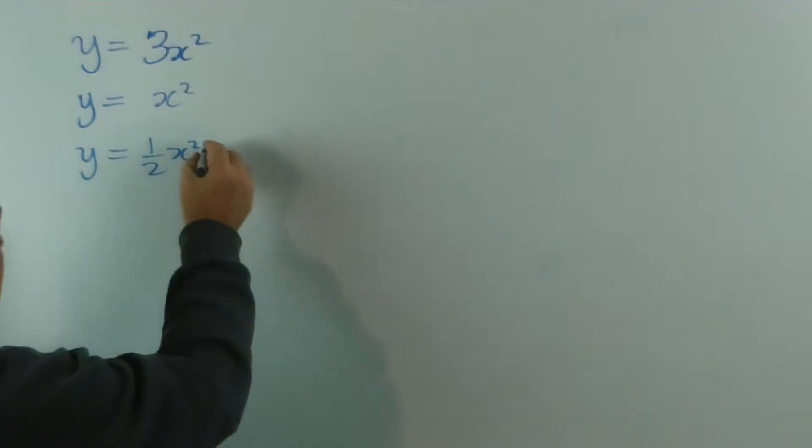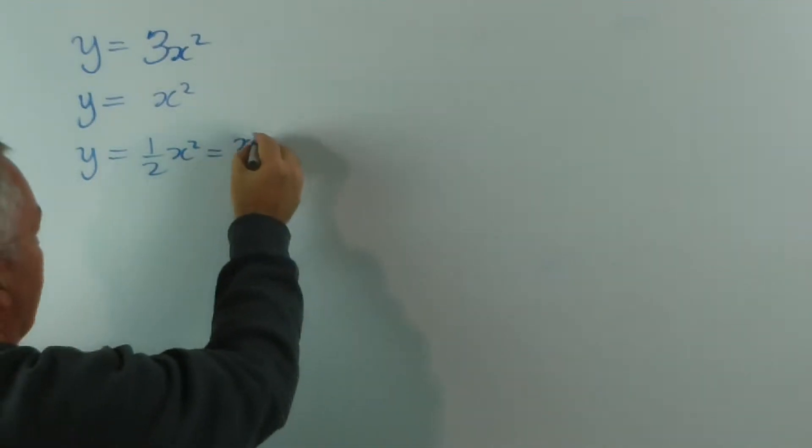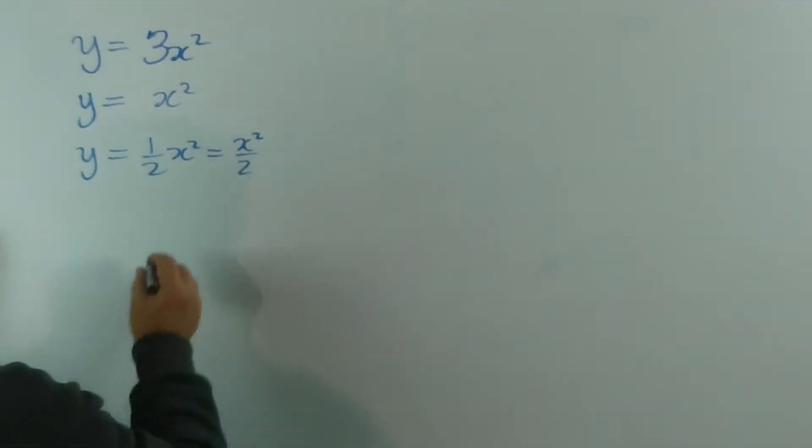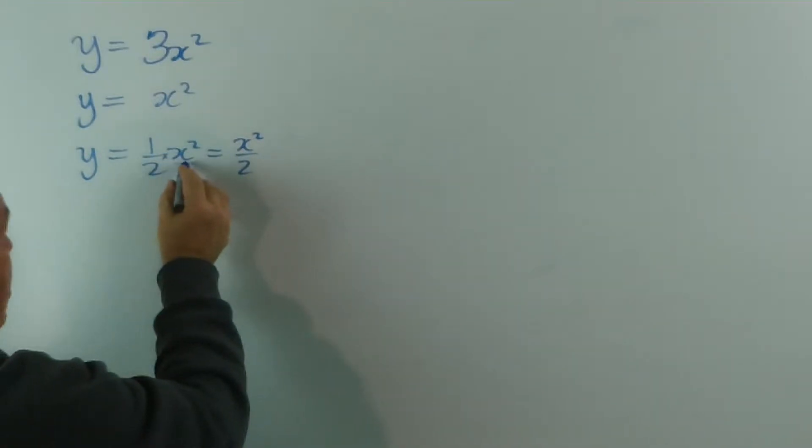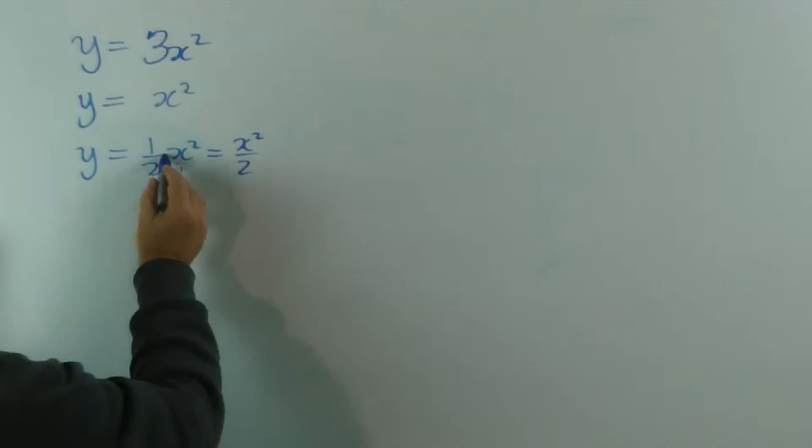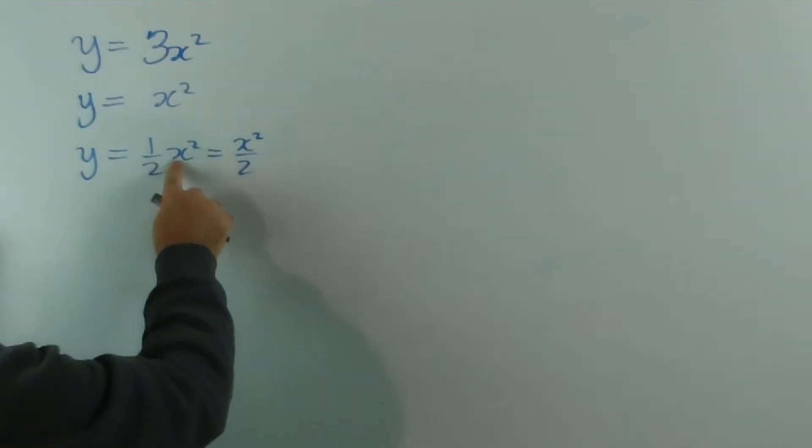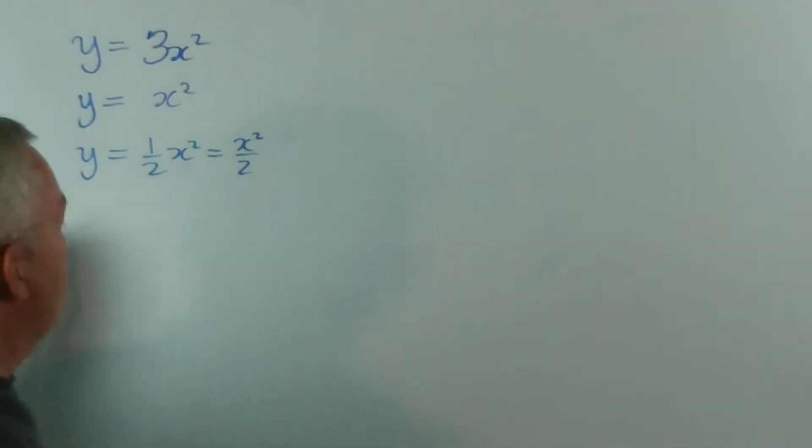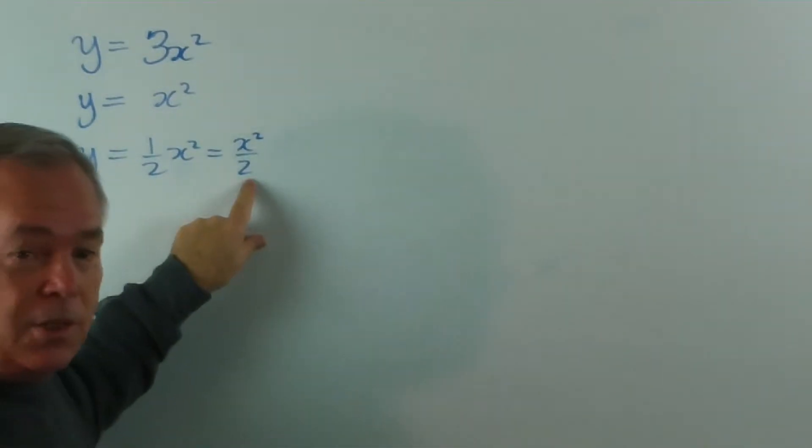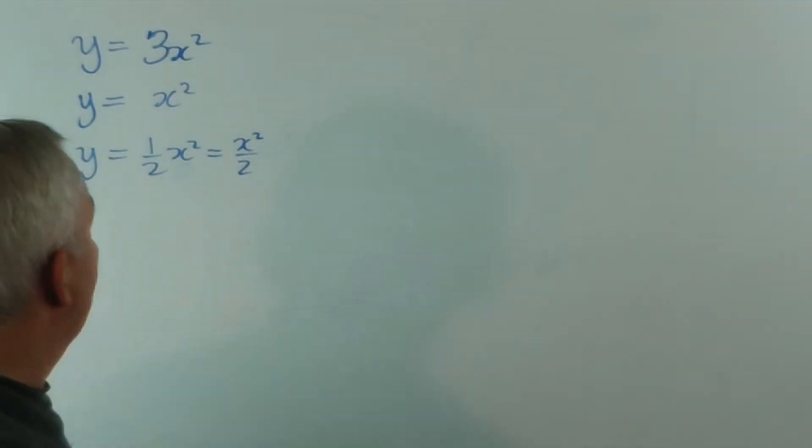By the way, this can also be written as x squared on 2, because this is half times x squared, and x squared is x squared over 1. So we have 2 times 1 on the bottom and 1 times x squared on the top. So, whichever you prefer. I actually prefer this notation, but this is very, very common.